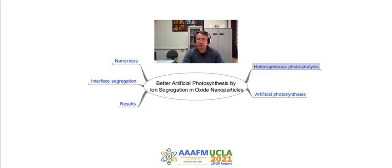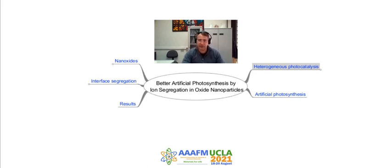Hi, my name is Douglas Gouveia. I'm a professor at the University of São Paulo in Brazil, and we have been working for over 20 years in understanding and quantifying the phenomena of segregation in ceramic oxide interfaces. Today we'll try to show you how this segregation is very important for better artificial photosynthesis.